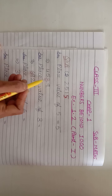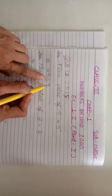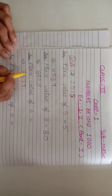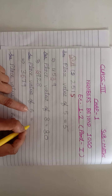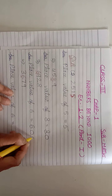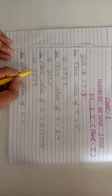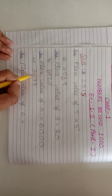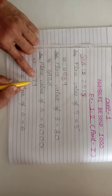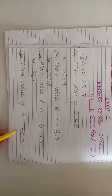First, write the place value of 8. Then write the place value of 6. The first number is 3,6,7,9,6 — the underlined digit is 6, so write the place value of 6.